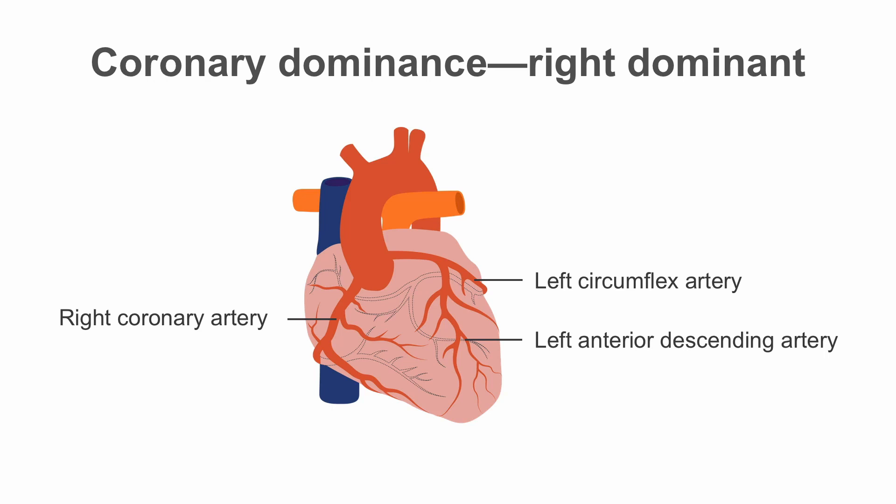A term that is commonly used is one called coronary dominance, and this can be an unnecessary source of confusion. Dominance of the right or left circumflex artery refers to the artery which gives off the posterior descending artery that supplies the inferior part of the heart.